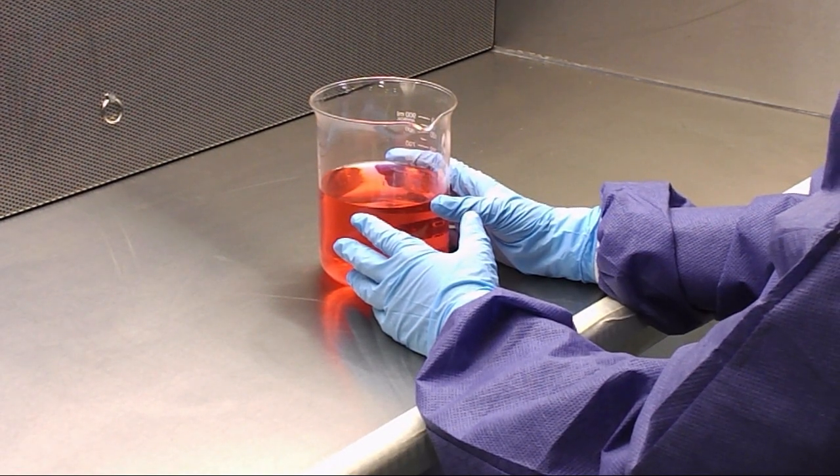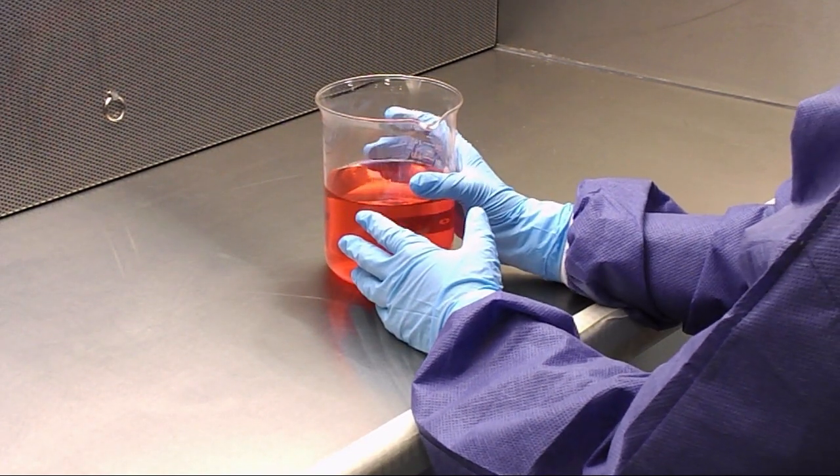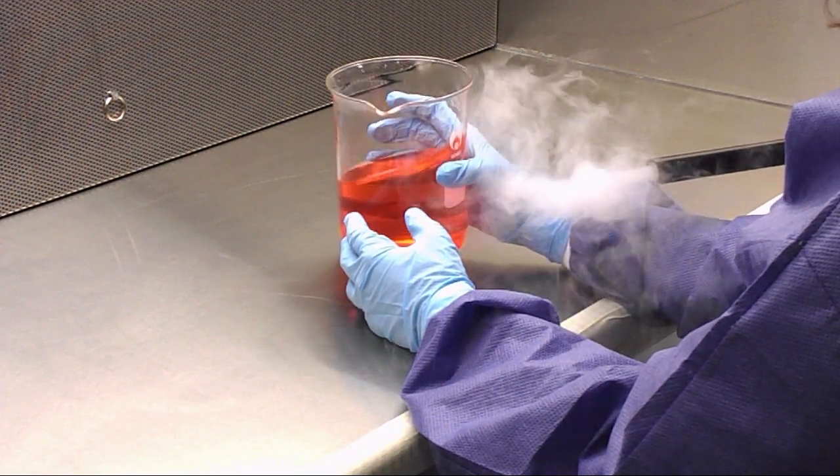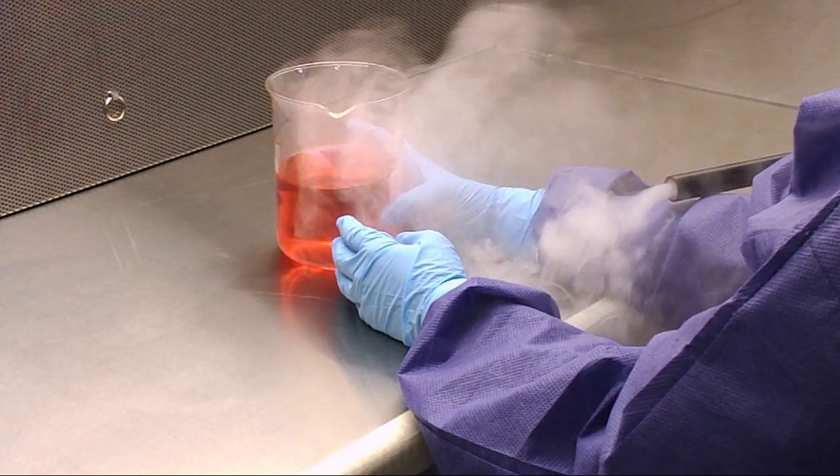This smoke demonstration shows what typically happens in other clean benches when turbulence is created in the air just outside the work surface. As you can see, room air is able to enter the work area, bringing potential contaminants with it.